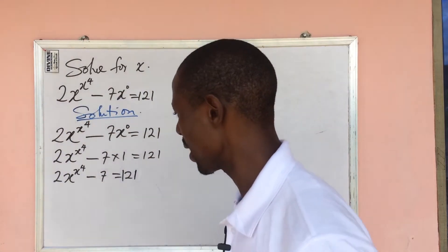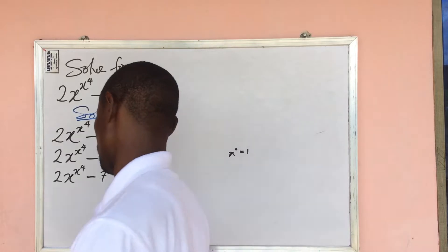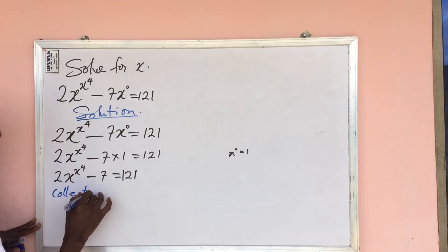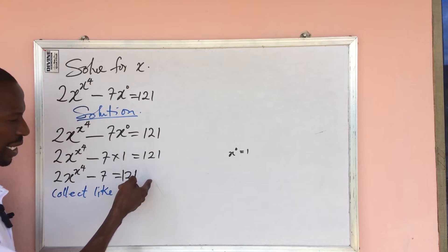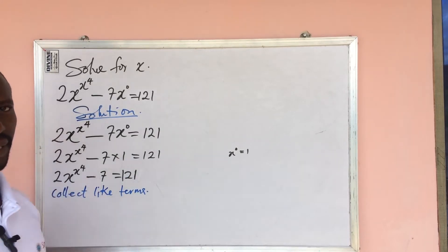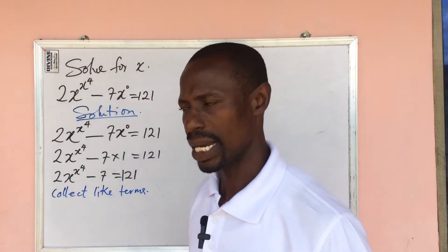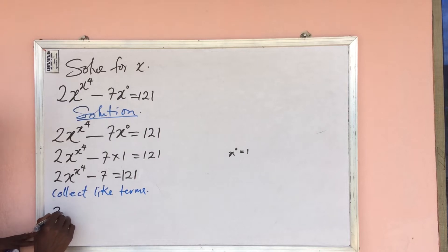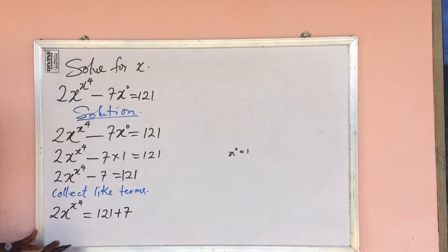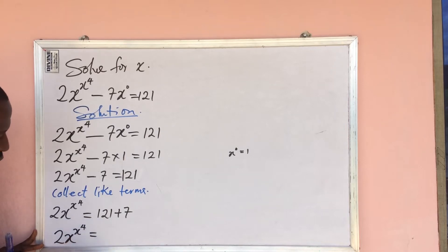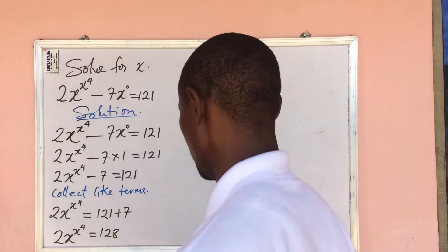We cannot collect our like terms yet, so from here we collect like terms. We send this 7 to the other side to meet the constant term. Here we have minus 7, so when it crosses the sign of equality it turns to plus 7. This becomes 2x to the power of x to the power of 4 equal to 121 plus 7, which gives us 2x to the power of x to the power of 4 equal to 128.